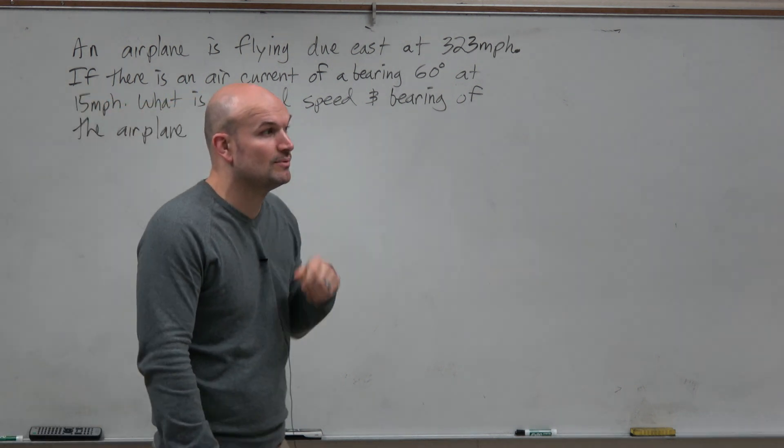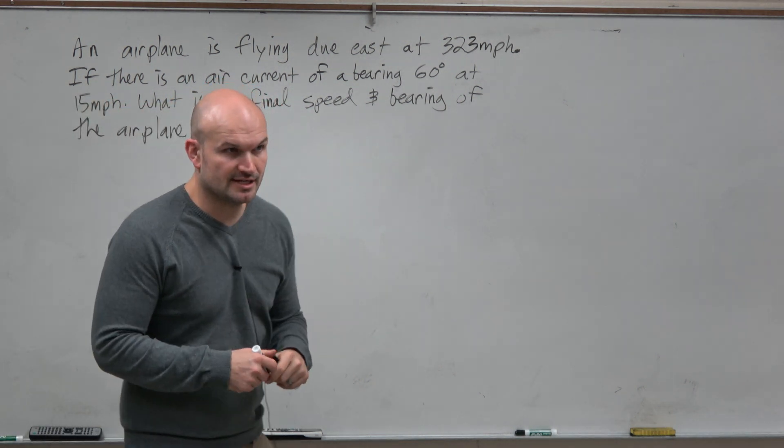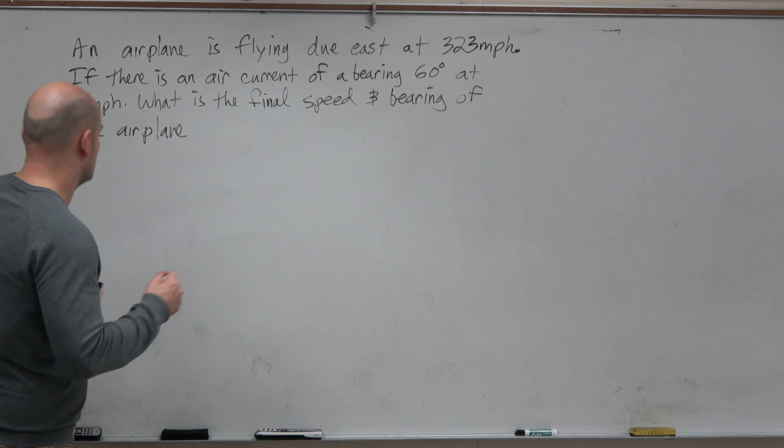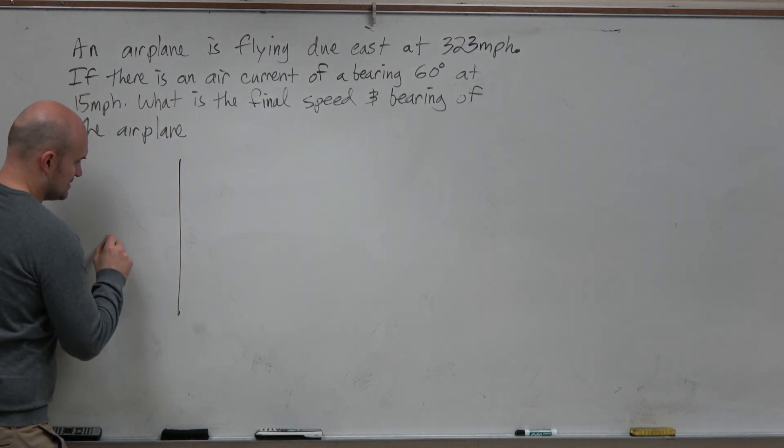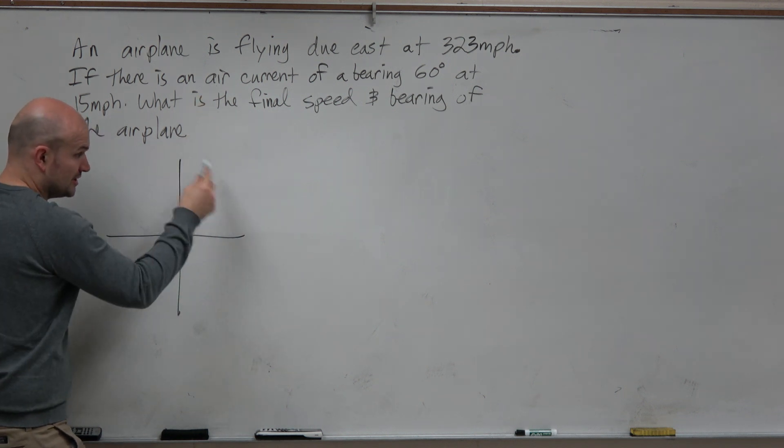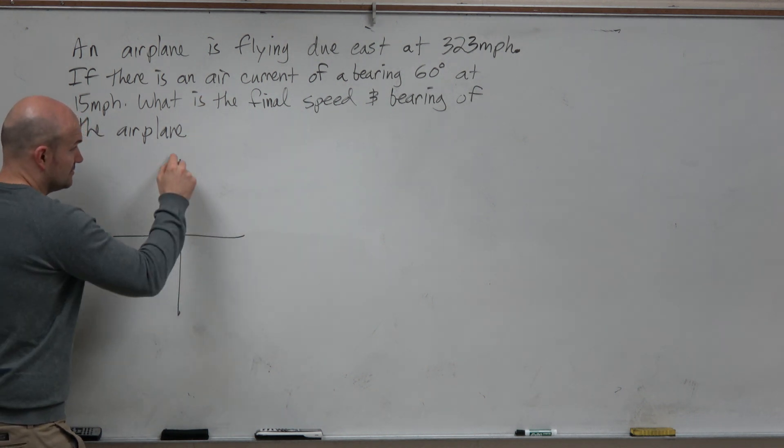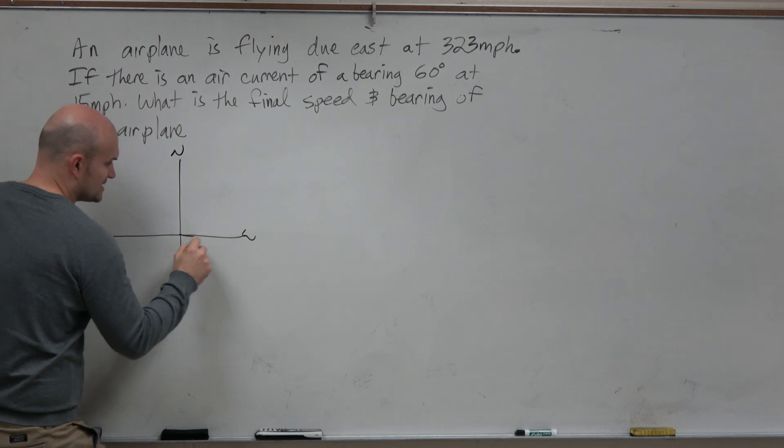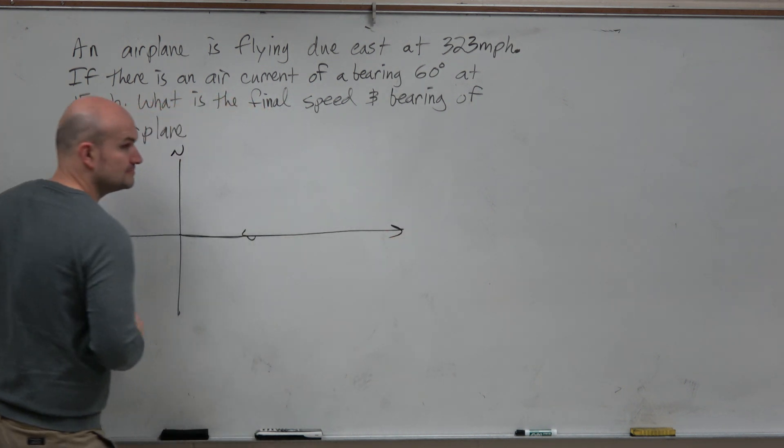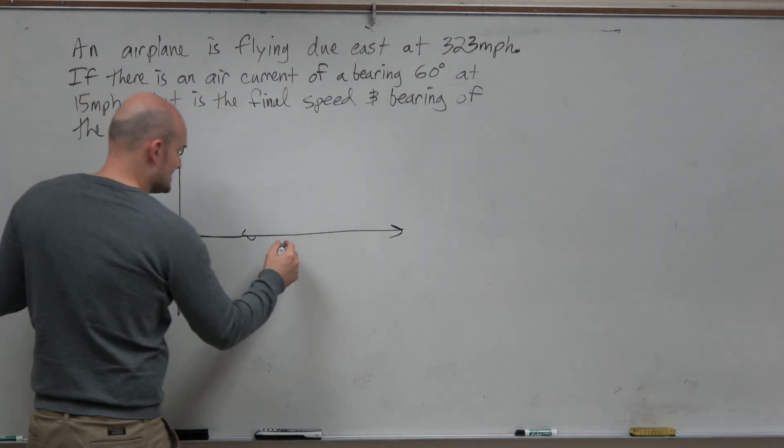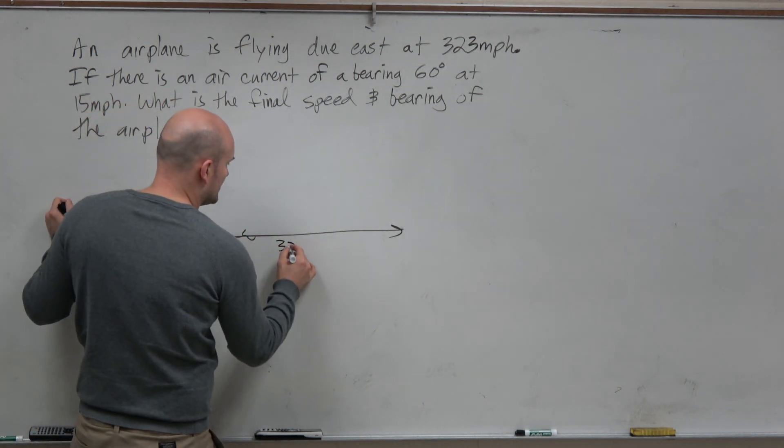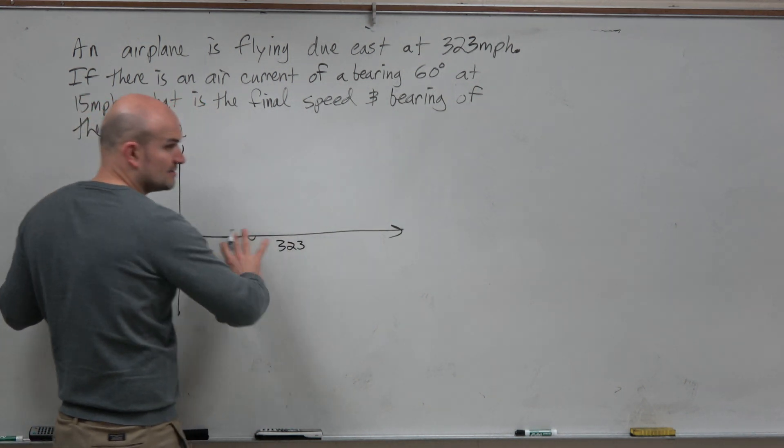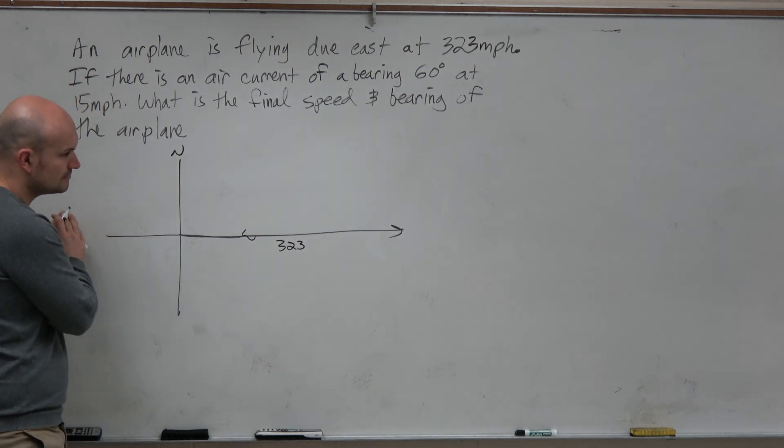The first thing you want to do whenever you have a word problem is to draw the picture. I can represent this with a bearing, so I'm going to do my little northeast-southwest thing. It's going due east, so let's say that's going to be 323 miles per hour. I'm going to skip the units for a second and just do the 323.